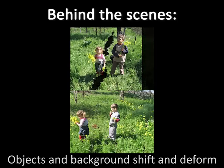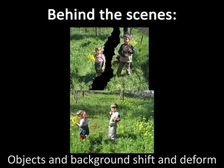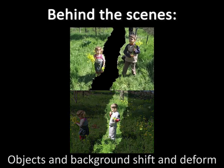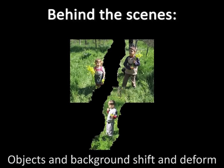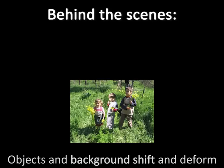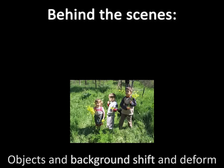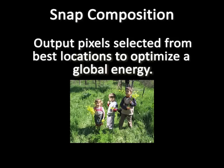What happens automatically behind the scene is that both images are deformed and recombined to form a seamless combination. This was done by assigning to each pixel in the output a pixel from one of the input images that can come from anywhere, in any location, and minimizes a global energy function.